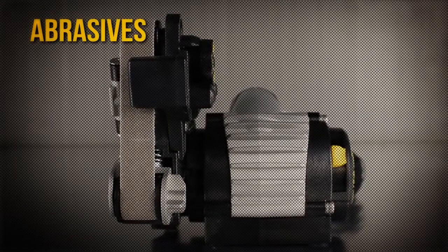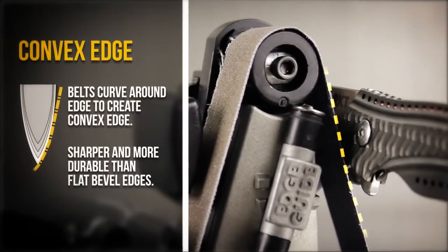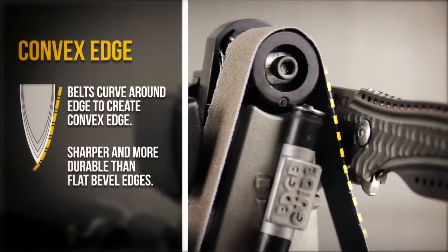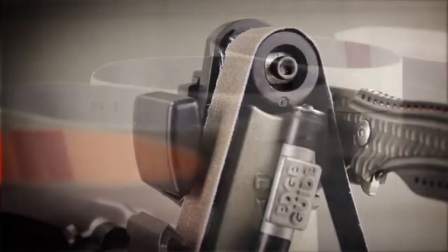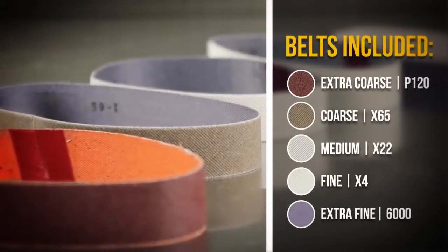Your sharpener uses abrasive belts to shape the edge. The flex of the belt creates a convex edge on any blade that is not only incredibly sharp but durable as well. Out of the box you will have a complete array of belts of varying grits.